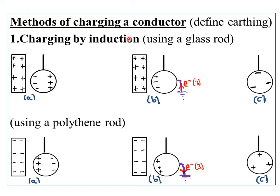Let's start by defining what we mean by the term earthing. Earthing is the process of losing charges to or gaining charges from the earth through a conductor. Whenever charges are lost to the earth or gained from the earth, that process we call earthing.